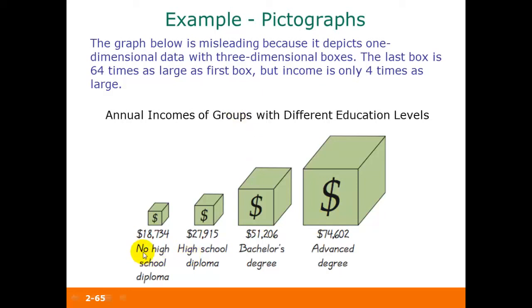This is definitely exaggerating the difference between the income for those with no high school diploma, which is $18,734, and the income for those with an advanced degree, which is $74,602. If you just look at the sizes of the boxes, this last box on the right looks huge compared to the first box on the left.